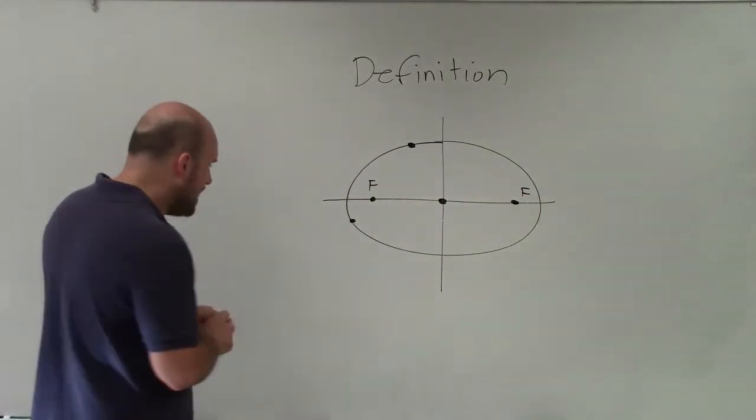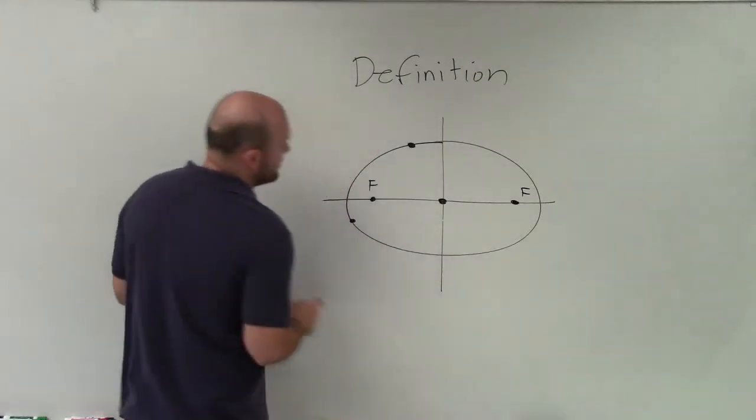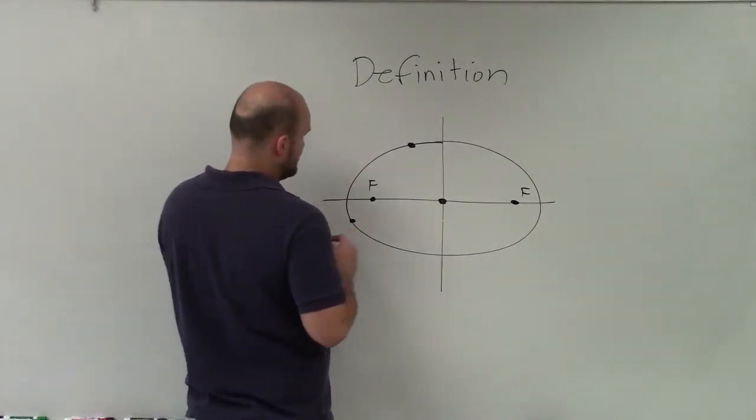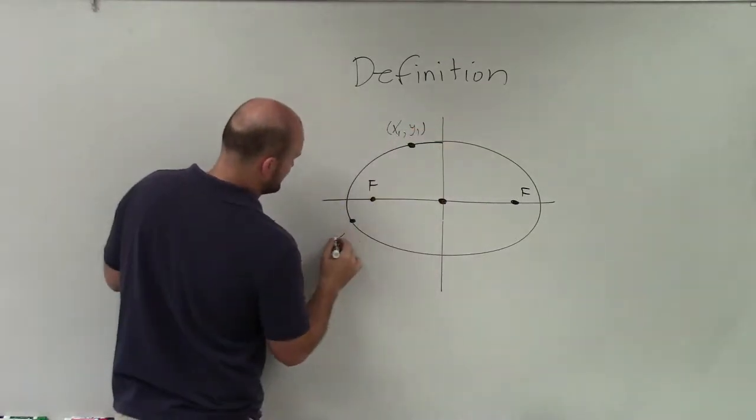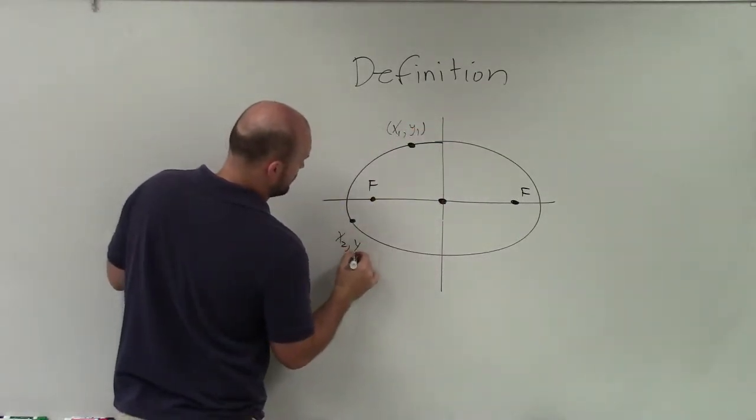And the sum of the distance to each point - let's call this point x1, y1, and let's call this point x2, y2.